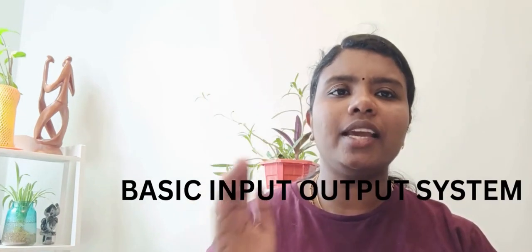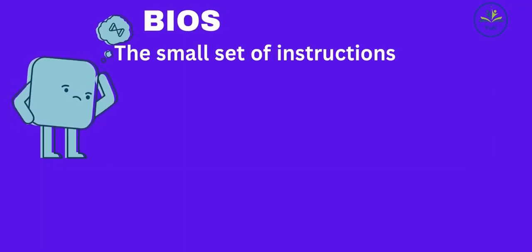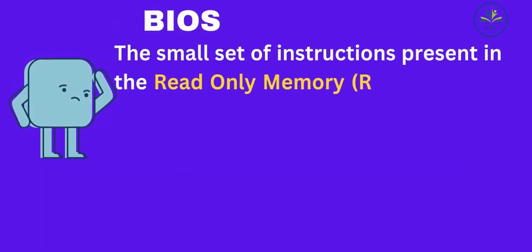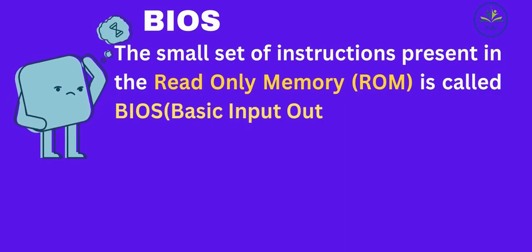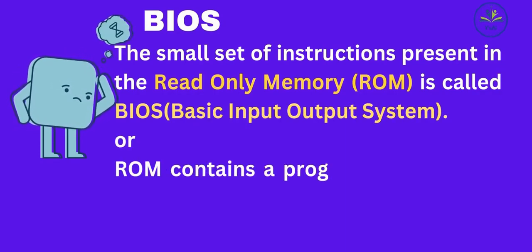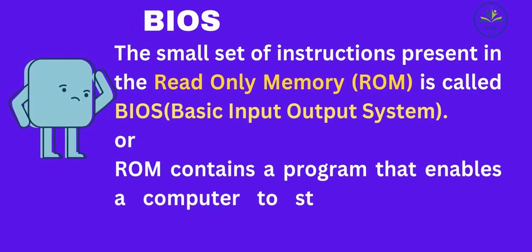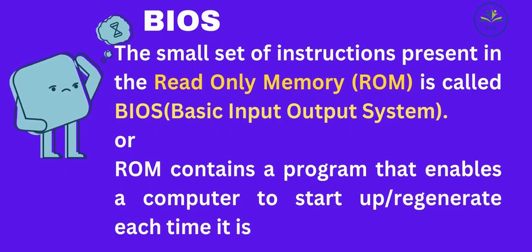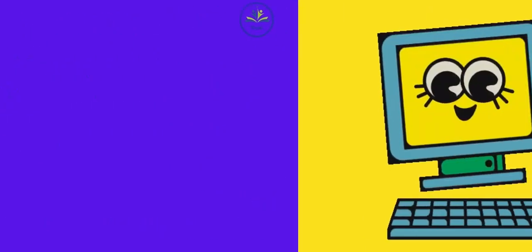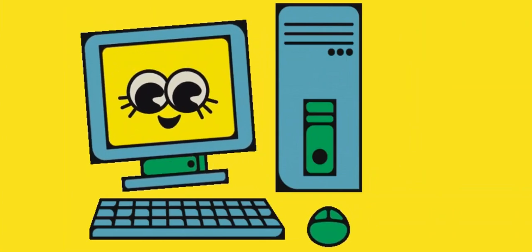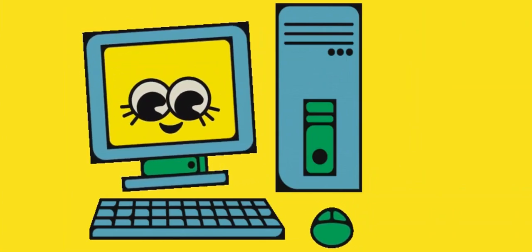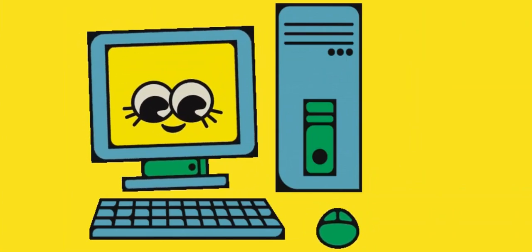Since ROM is hardwired on the motherboard, its contents cannot be erased. The small set of instructions present in ROM is called BIOS, which means Basic Input-Output System. BIOS contains a program that enables a computer to start up each time it is turned on. So BIOS is a small set of instructions present in ROM that allows the computer to boot.